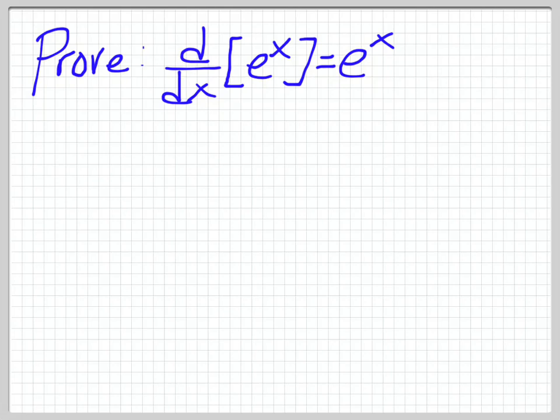So first of all, we need to recognize that y is equal to e to the x. That's our function. So what we can do is we can take the ln of both sides. So ln y is equal to ln of e to the x.